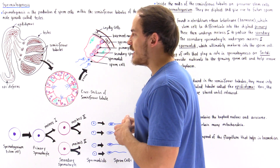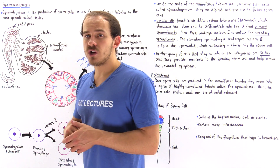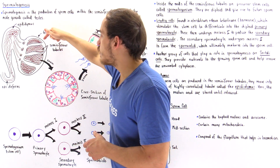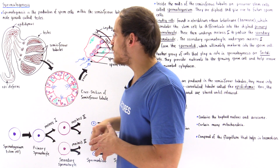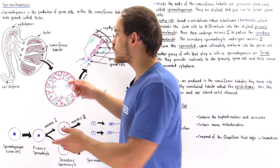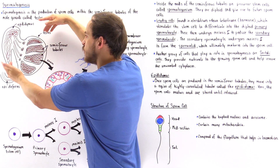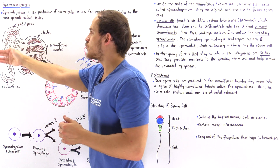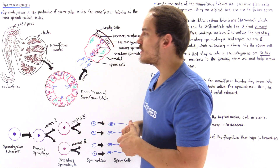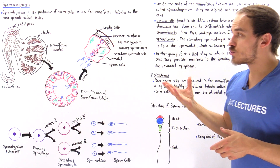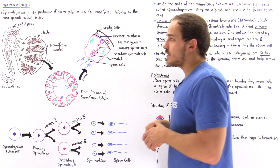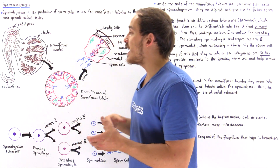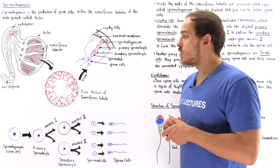Taking a cross section of the male gonads — our testes — we get the following diagram. These brown convoluted tubules are the seminiferous tubules, and they eventually converge to form a highly convoluted structure known as the epididymis. Before discussing the function of the epididymis, let's first discuss the function and structure of the seminiferous tubule.